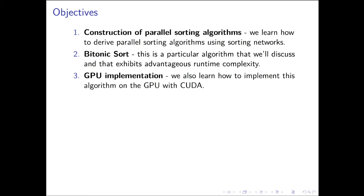As always, let's start by discussing the objectives. We'll learn how to construct parallel sorting algorithms — in particular, something called a sorting network. A specific parallel sorting algorithm we will discuss is the so-called bitonic sort algorithm. We'll not only derive the algorithm but also discuss its complexity, and then in a case study fashion, we'll see how to port bitonic sort to the GPU using the CUDA API, transforming a non-trivial serial C++ algorithm to expose enough parallelism to scale on a GPU.